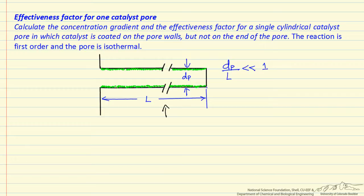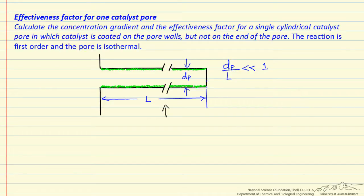To make this calculation easier, the catalyst — shown in green — is on the wall of this pore, but not on the end. What we want to do is determine how effectively we're using the catalyst: namely, what is the rate of reaction in this pore divided by the rate if diffusion were sufficiently fast that the reacting concentration is the same everywhere inside the pore.